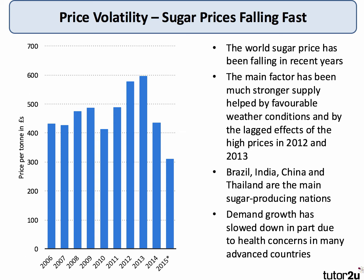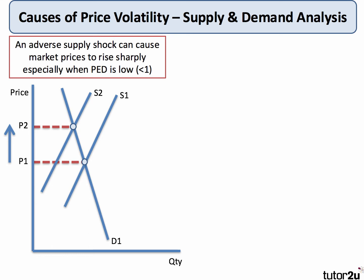Now let's think about the analysis diagrams which could help you explain price volatility. In the first example, we can look at the impact of an adverse supply shock — for example, extreme weather events which bring about significant falls in production. It could be drought in some markets, flooding in others, or extreme temperatures affecting the supply of a farming primary commodity.